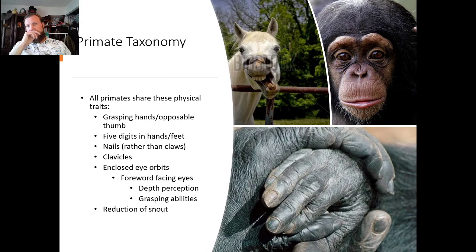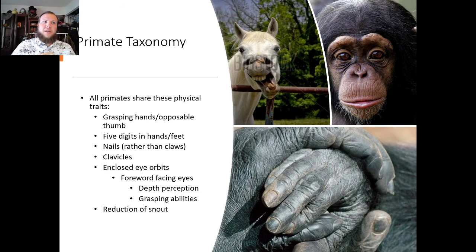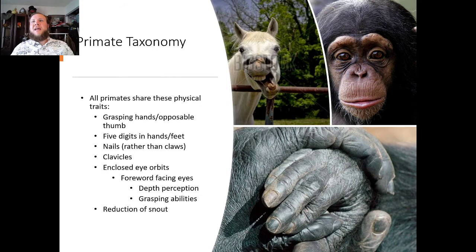All primates share these physical traits: grasping hands, an opposable thumb, five digits on hands and feet, nails rather than claws, clavicles — which are important for brachiation — and closed eye orbits with forward-facing eyes for better depth perception and grasping abilities. Unlike horses, which have side-facing eyes to see predators coming up behind them, we are more interested in what's in front of us — like the branch we're trying to grab.